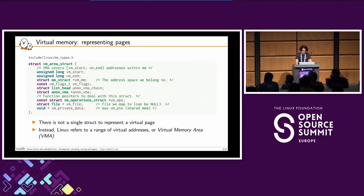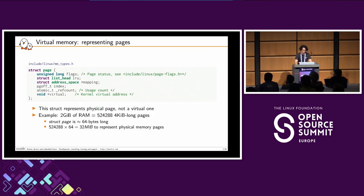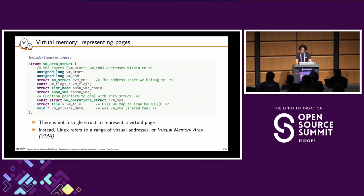I'm trying to draw a parallel with how virtual pages are represented, but it's not so straightforward. What Linux actually sees is a virtual memory area with a beginning, an end, and an array of virtual pages in between. So it's complicated to draw this parallel because there is not a single struct to represent this concept.